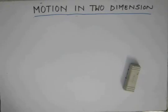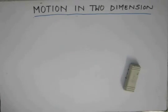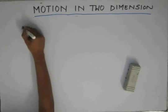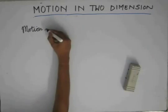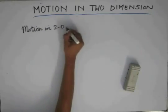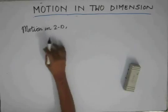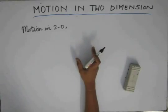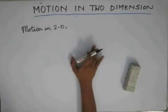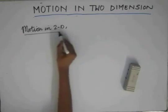Hello friends. After covering motion in one dimension, we move on to the next topic, that is motion in two dimensions. By motion in two dimensions, what we mean is the motion of the particle is restricted in a plane. That is, if a particle is moving in this plane at some instant of time t, then after some instant of time delta t, the particle should be in the same plane. This is known as motion in two dimensions.